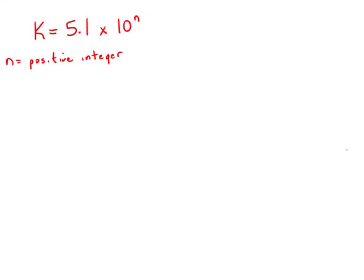If n is a positive integer and k equals 5.1 times 10 to the n, what is the value of k? So we know a fair bit about k already.